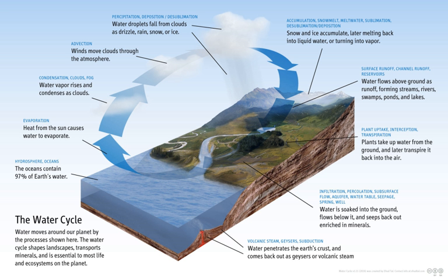Precipitation: condensed water vapor that falls to the Earth's surface. Most precipitation occurs as rain, but also includes snow, hail, fog drip, graupel, and sleet. Approximately 505,000 km³ of water falls as precipitation each year, 398,000 km³ of it over the oceans.